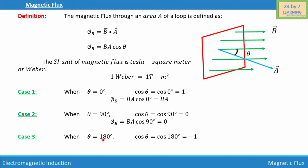Case three: when theta is equal to 180 degrees, cosine theta equals cosine 180, which is equal to negative one. Then magnetic flux phi B is equal to B A cosine 180 degrees, and since cosine 180 is negative one, that gives us negative B A. And this is how we define magnetic flux.